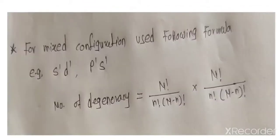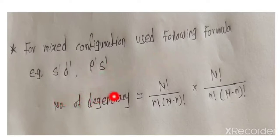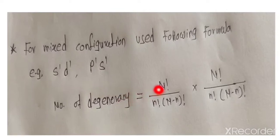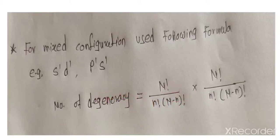Now, in exams the question may ask to calculate the degeneracy for a mixed configuration. A mixed configuration means something like S1D1 or P1S1. For a mixed configuration the formula is: number of degeneracy equals [N! / (n!(N-n)!)] times [N! / (n!(N-n)!)] — one term for each orbital type. Capital N is the capacity of that electron in each respective orbital, S and D. Perform the calculation as usual and you get the degeneracy for the mixed configuration.